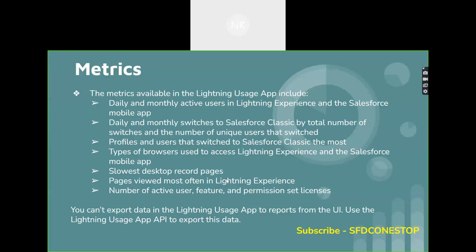The key metrics include: daily and monthly active users in the Lightning Experience and the Salesforce Mobile Application; daily and monthly switches to Salesforce Classic by total number of switches; the number of unique users that switched; profiles and users that switch to Classic the most — these are the most important metrics you can get using the Lightning Usage App. You can also see the type of browsers used to access the Lightning Experience and the Salesforce Mobile App, and what are the slowest record pages.